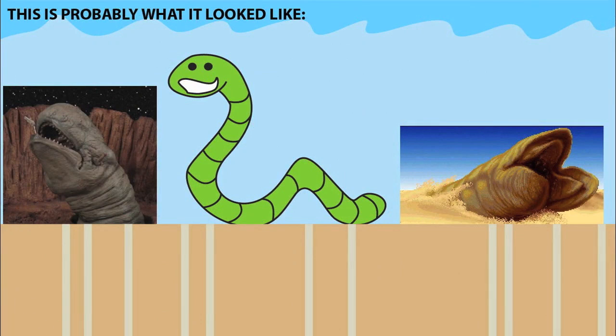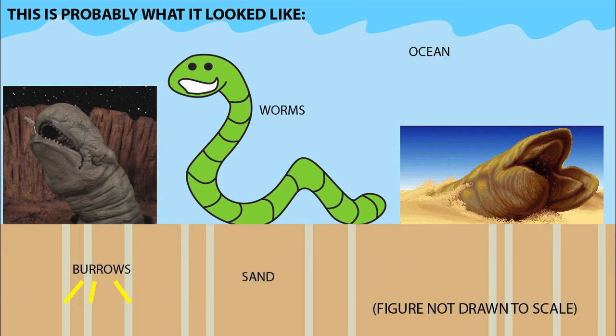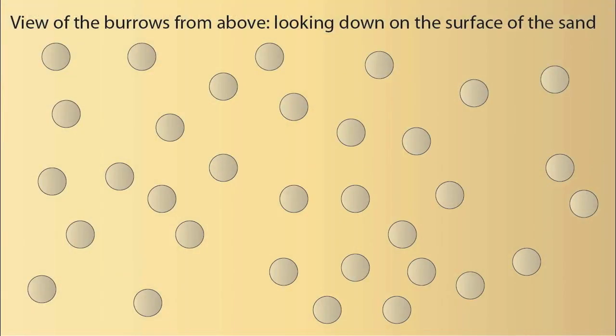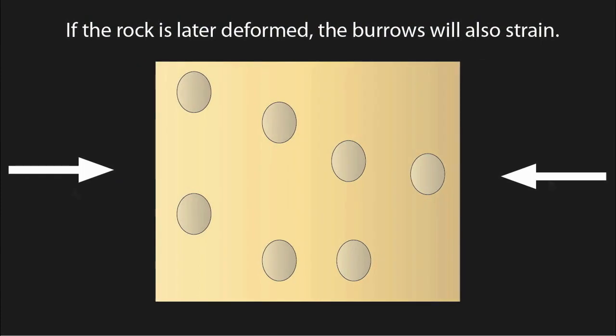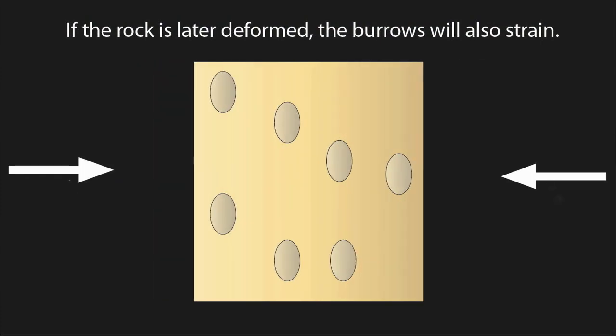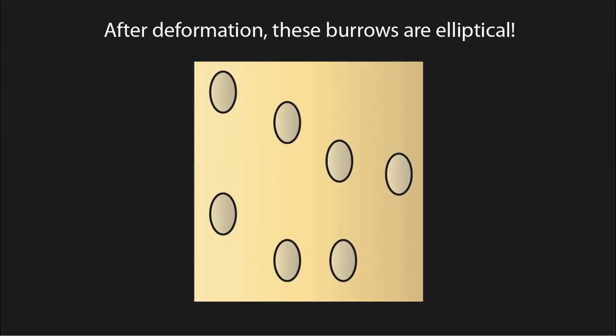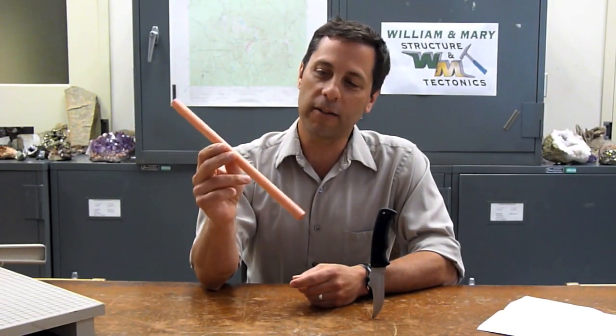Way back when this rock was still sediment in the ocean, little wormy critters burrowed tubes in the sand. These burrows have been preserved in the rock as trace fossils, and we generally assume that they were originally round at the top. If the rock gets deformed, then the burrows end up looking more elliptical. We can think about these worm burrows as cylindrical pipes that are actually in the rock. In their undeformed state, they would have a circular cross-section when you look parallel to their long axis. But what if we don't look parallel to their long axis?